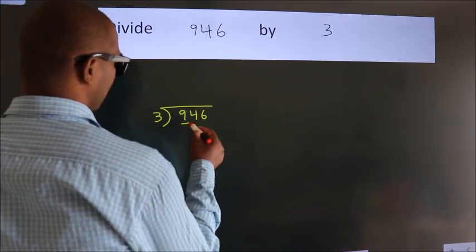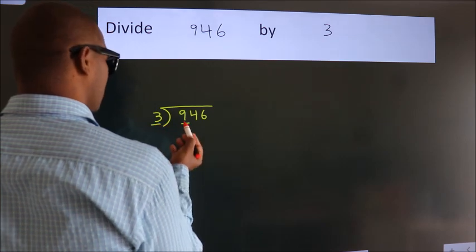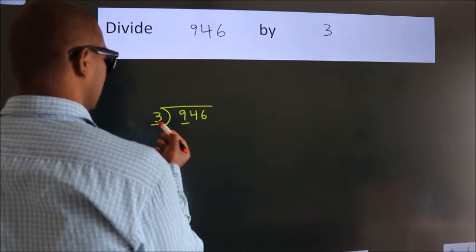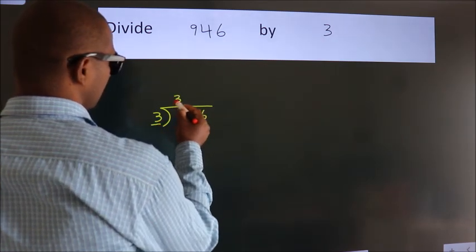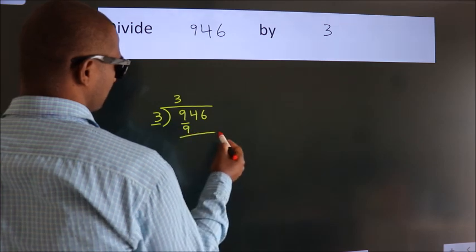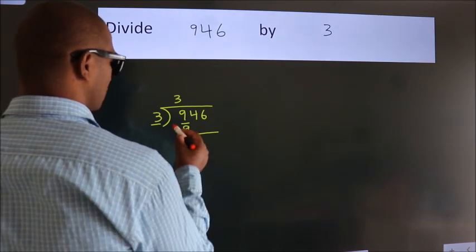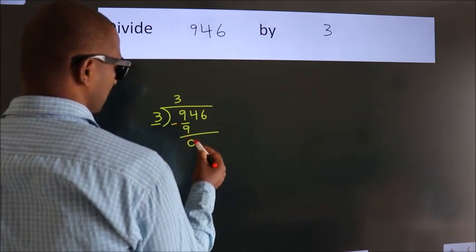here we have 9, here 3. When do we get 9? In 3 table, 3 times 3 is 9. Now, we should subtract, we get 0.